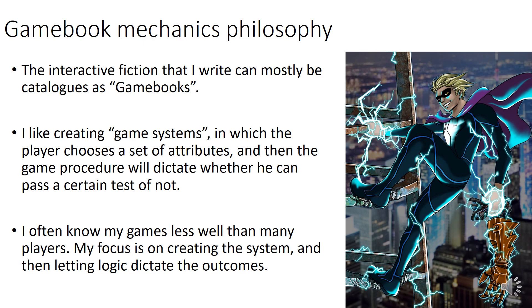Gamebooks have a set of attributes and a series of game mechanics that dictate whether you pass a certain test or not. So it's not just that you make choices — these choices also look at your attributes and compare them. If you have a certain strength, for example, you can bash the door; if you don't have enough strength, you would fail that test.